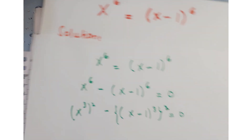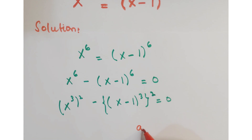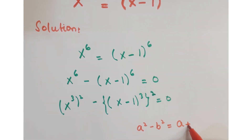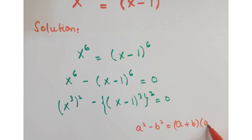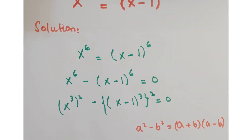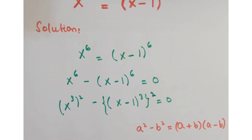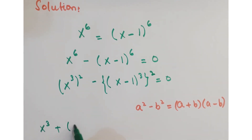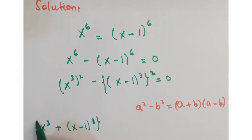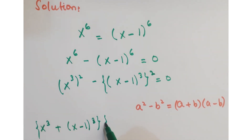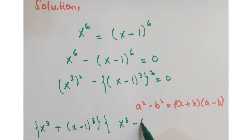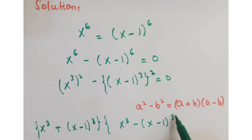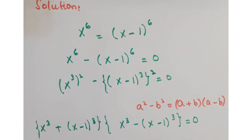Here you will apply the algebraic identity a squared minus b squared equals a plus b into a minus b. Expanding this, you can write this as x cube plus x minus 1 whole cube, into x cube minus x minus 1 whole cube, equals 0.